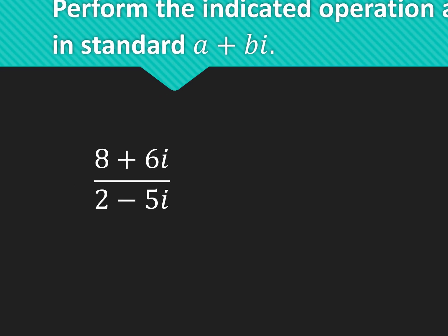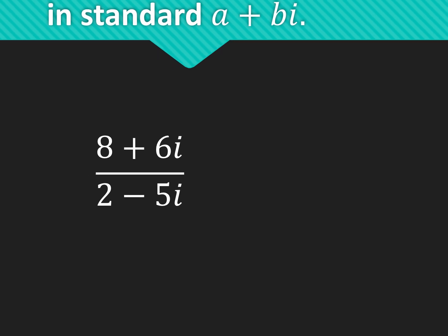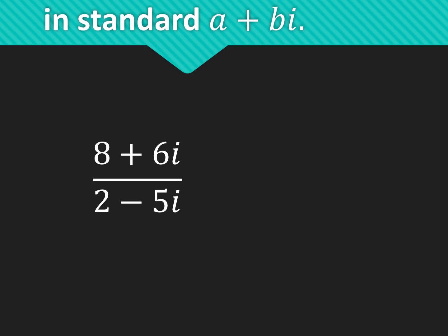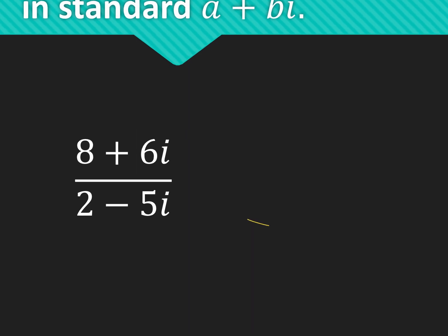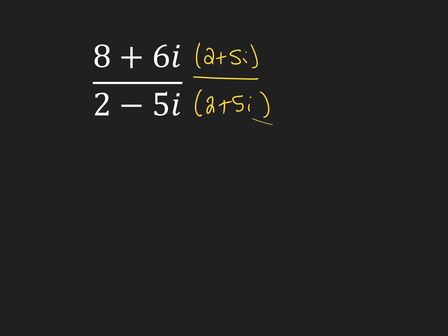All right, these next two — we are dividing. The problem is we cannot have i's in the denominator. So if you have two terms separated by a plus or minus sign, we need to multiply the numerator and denominator by the complex conjugate of the denominator. So the complex conjugate of 2 minus 5i is 2 plus 5i. What you do to the bottom, you do to the top.